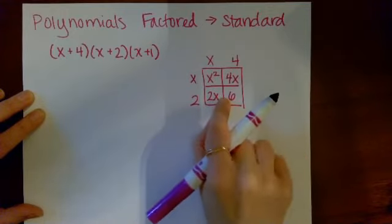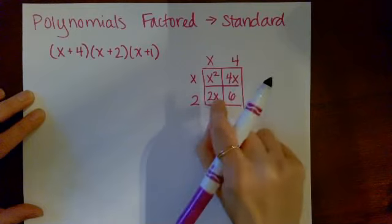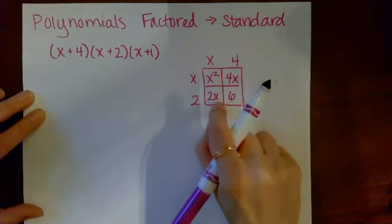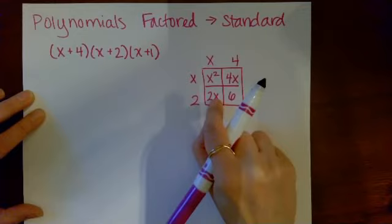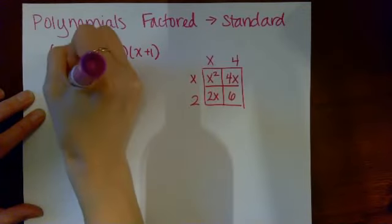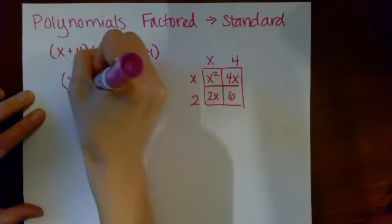I'm now going to rewrite my terms in here in standard form. I've already noticed that two x and four x are like terms, so when I go to write those down, I'll combine them to get six x. So now I know the product of x plus four and x plus two is x squared plus six x